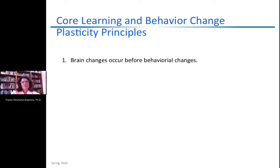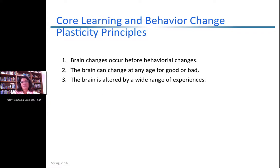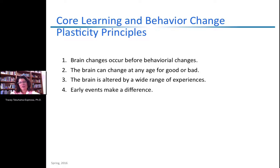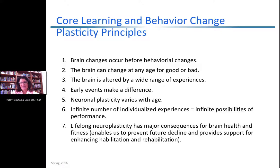Seven big principles emerge from this: microscopic changes in the brain occur before behavioral changes are visible. The brain can change at any age — for good or bad — meaning neuroplasticity is not always positive. Plasticity lasts throughout the lifespan. The brain is altered by a wide range of experiences, and no two individuals react to those experiences the same way due to genetic makeup. Early events make a difference — your mother's nutrition during pregnancy influences your brain potential. Neuroplasticity varies with age, and learning effort increases throughout the lifespan. And there is an infinite number of individual possibilities based on unique genetic makeup.